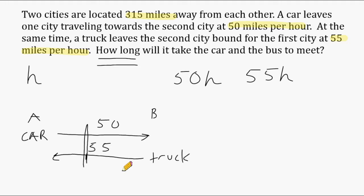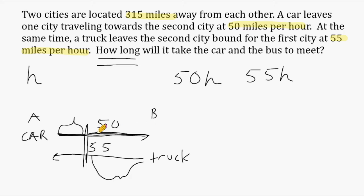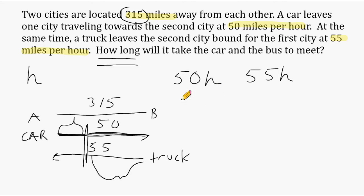No matter where the two vehicles meet up, the truck will have traveled a certain distance and the car will have traveled a certain distance. Whatever those two distances are, the distance the car travels plus the distance the truck travels will equal the entire distance between City A and City B — which is 315 miles. So if we multiply h by 50 for the car's distance, and multiply h by 55 for the truck's distance, and add those together, we get 315 miles.